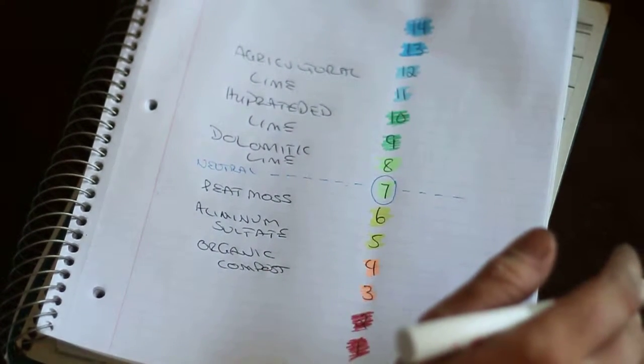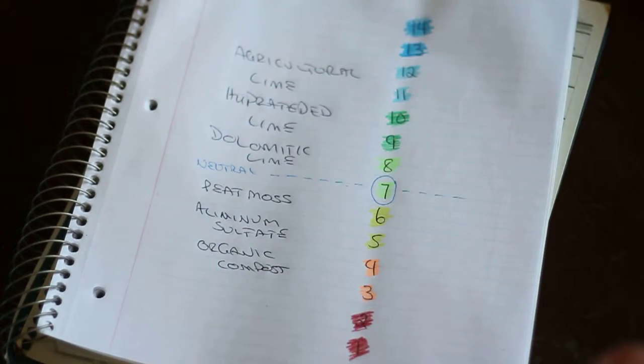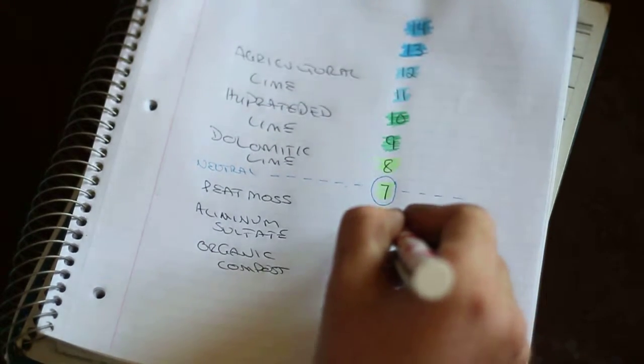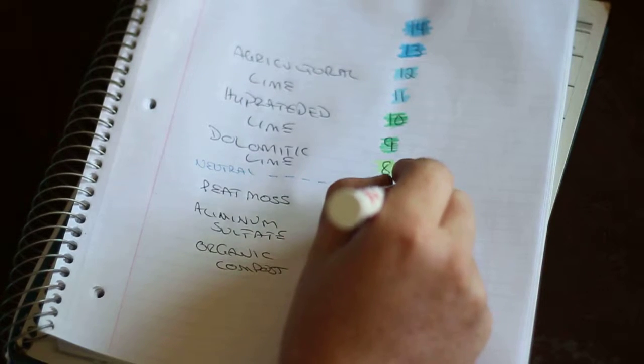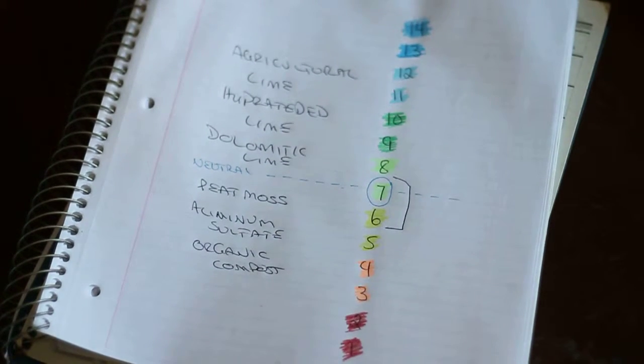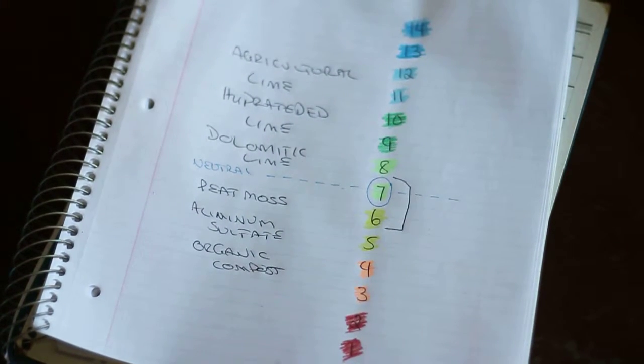So there are a few different plants that require a few different things. Most plants are going to be happy between about a six and a seven and a half rating, so somewhere in that range. That'll be the majority of your plants.